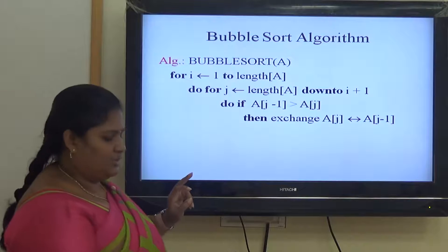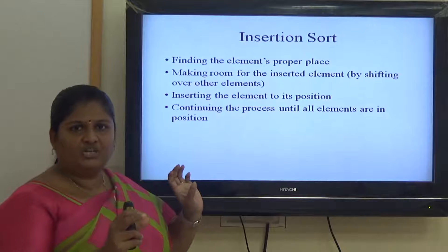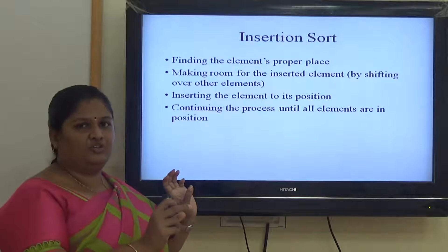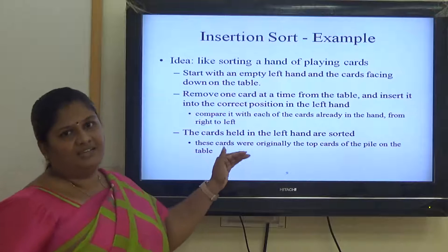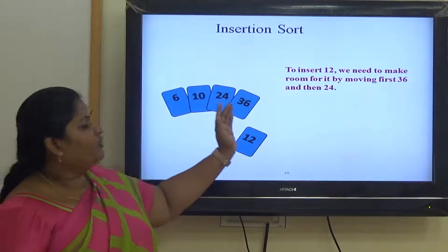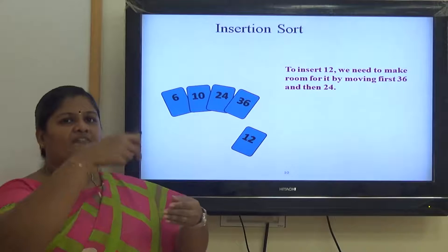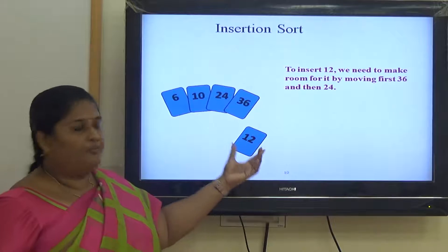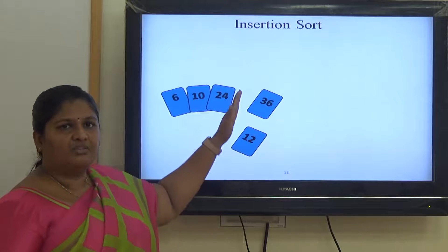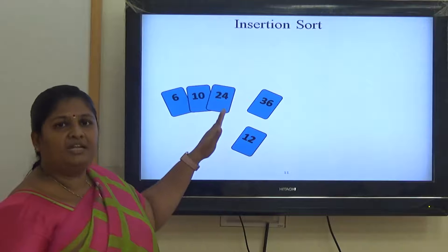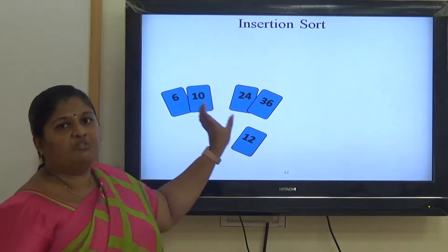The next easy sort is insertion sort. The word itself says insertion — here we are finding a particular position where the element is to be inserted, we take the element and insert it in the position. This is the basic concept of insertion sort. To easily understand the concept, we can take the example of playing cards. When I have 4 cards in my hand and a new card comes in, I will just move to the position where the actual card is to be inserted. For example, I have to insert 12, and I already have cards 6, 10, 24 and 36. I will compare the last element — if it is greater, I will move it. So I can insert here. But again, I compare with the previous element — this is also higher when compared with the new element, so I just move it. Here the position is found, and I can insert the new element. This is the concept of insertion sort.